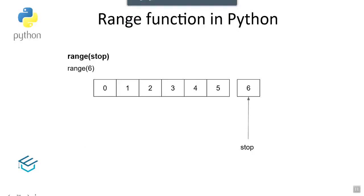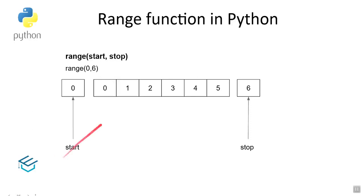The range function — range(0, 6) — the start value is 0 by default, so 0 1 2 3 4 5 display. The start value is 0 by default. If we pass 0 comma 6, the result is same: 0 to 5. If we change the start value to 1, the start begins from 1.